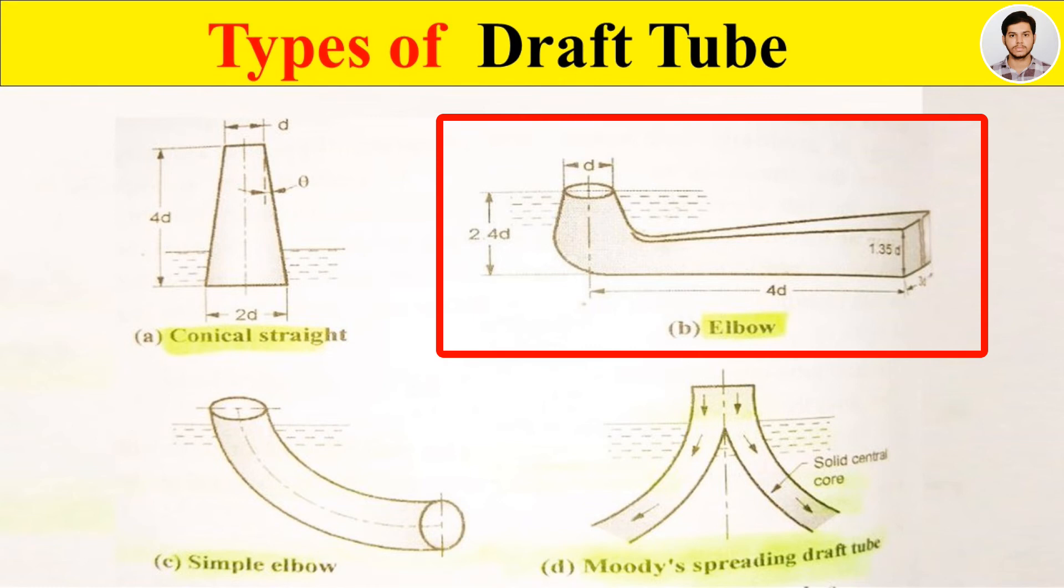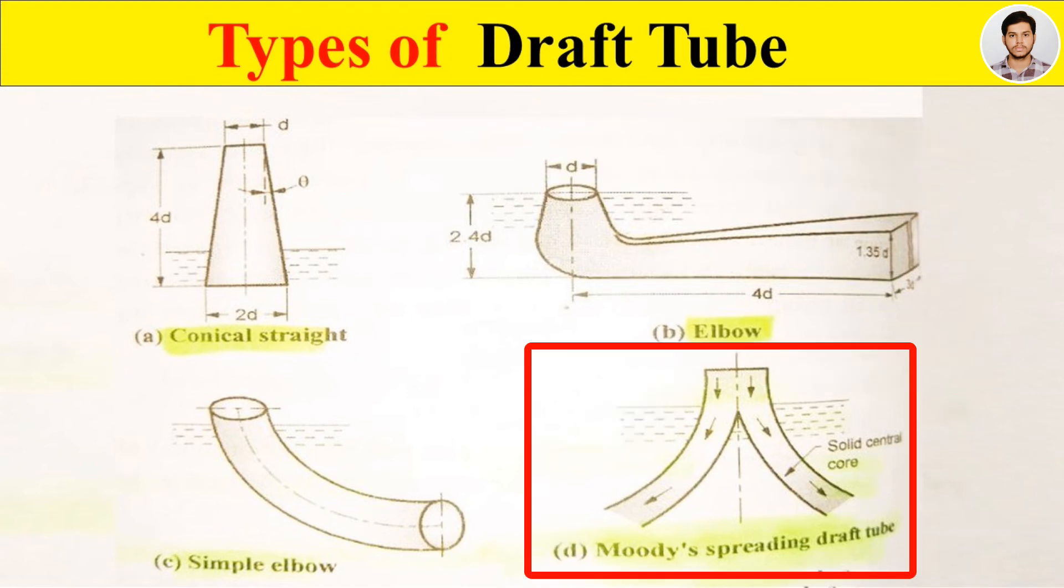The last is a Moody's spreading draft tube. It is similar to conical draft tube. It is provided with a solid central core which reduces the whirling action of the water. It has efficiency up to 85 percent.